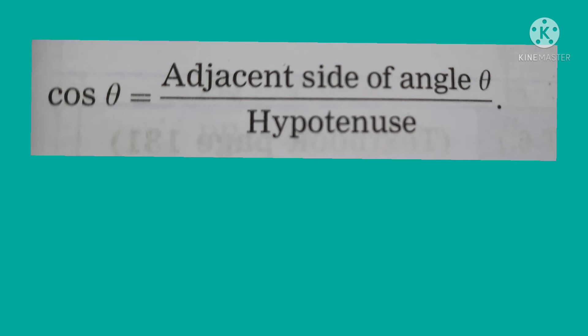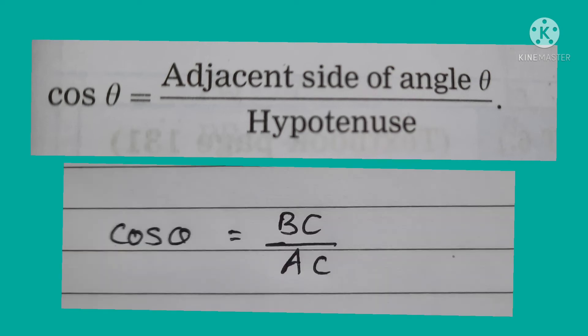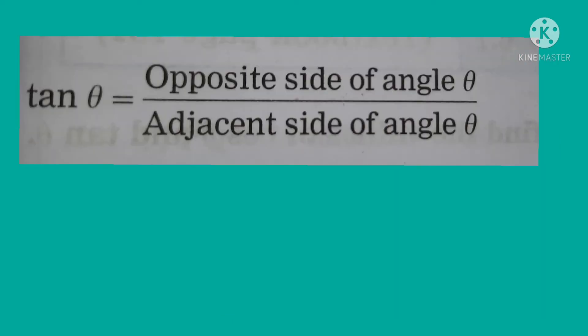The next trigonometric ratio is written using the adjacent side and hypotenuse of triangle ABC. Cos theta is equal to adjacent side of angle theta upon hypotenuse. Symbolically, cos theta equals BC upon AC.